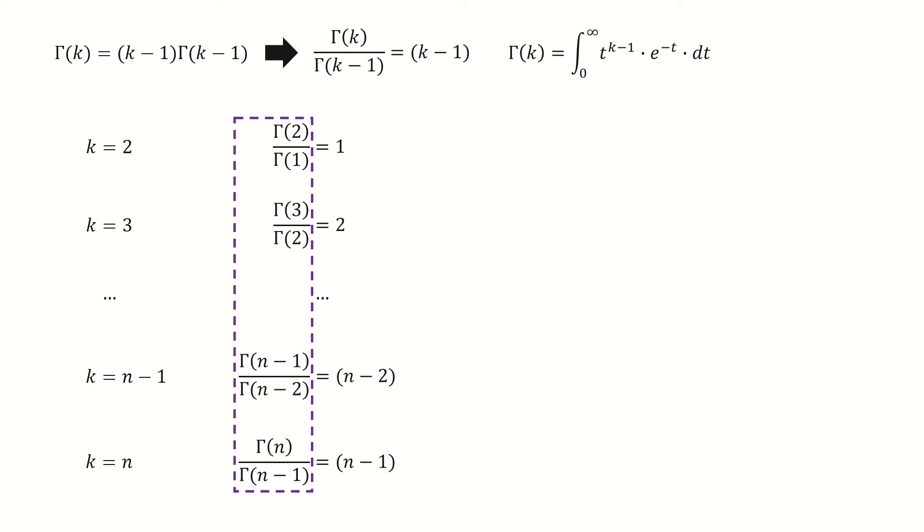Next, we multiply all the terms inside this purple box. You can see all these terms cancel out on the diagonals, so we get this equation.